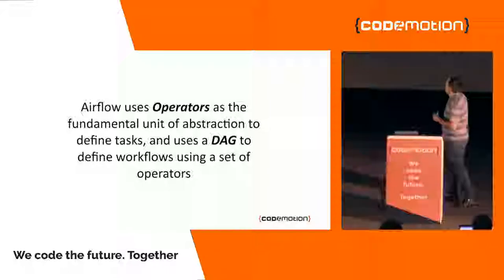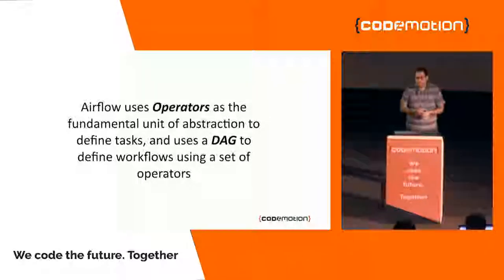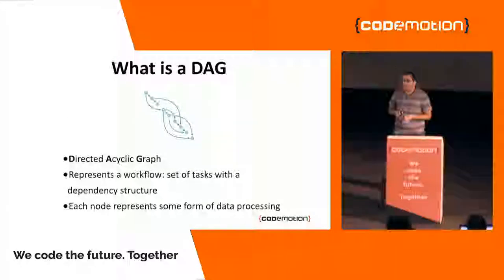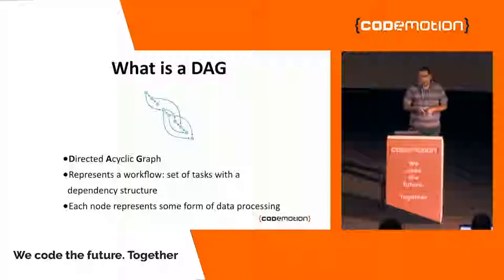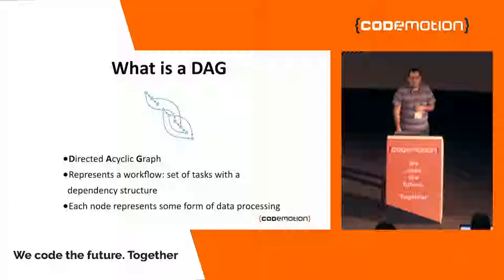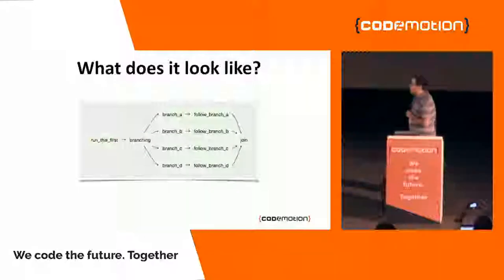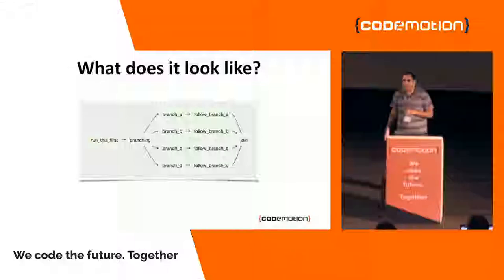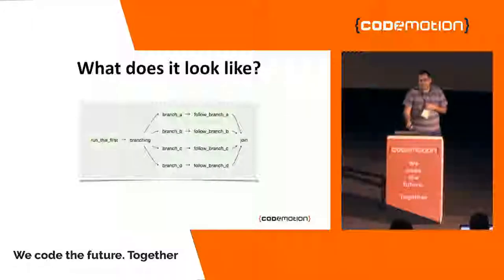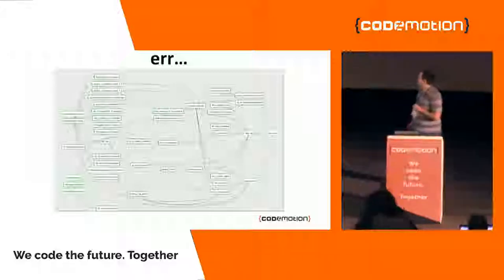Airflow uses operators as the fundamental unit of abstraction to define tasks, and uses a DAG to define workflows using a set of operators. A DAG — a directed acyclic graph — represents a workflow, which is a set of tasks with a dependency structure. Each node represents some form of data processing. It can look like: a task, then a branching task that depends on the first, then four branches joining on a last task. But it could be really complex, as in a real DAG with lots of steps.